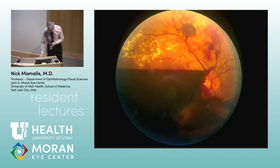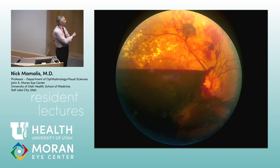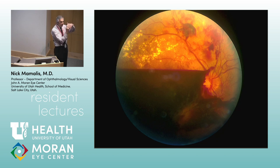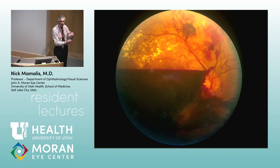Those vessels can leak, causing hemorrhage, gliosis, scarring, and tractional retinal detachments. You can also get a large pre-retinal boat-shaped hemorrhage. Why boat-shaped? It's pre-retinal — in the space between the retina and the posterior vitreous (the hyaloid face). The blood fills that layer, giving a flat fluid layer on top and a boat shape below. It hasn't broken through into the vitreous yet. You can see the neovascularization right there.